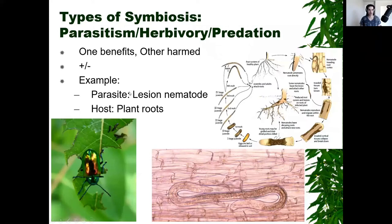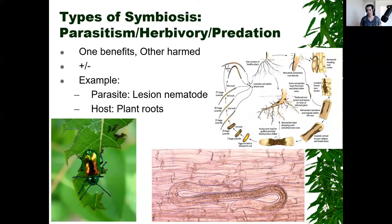We also have parasitism, herbivory, and predation — I've grouped these together. Parasitism is where a parasite lives in a host: the parasite benefits and the host obviously does not. Even herbivory — bugs eating plants — doesn't help the plant. And predation, like foxes and hares or wolves and rabbits: wolves eat bunnies, which doesn't benefit the bunnies, but it benefits the wolves because now they're fed. In all these cases, one thing benefits and the other is typically harmed.